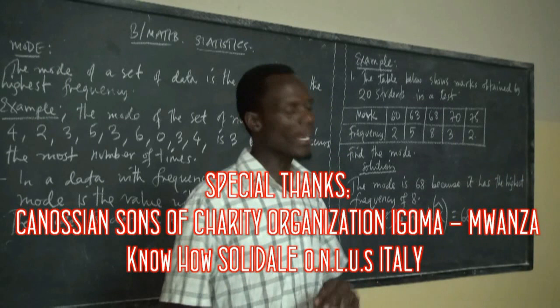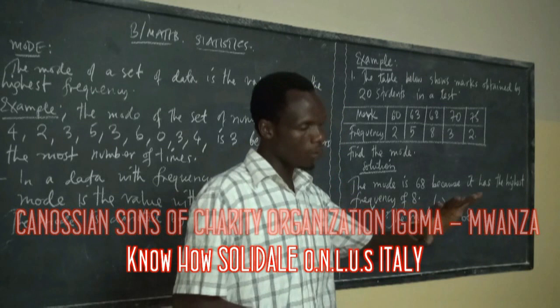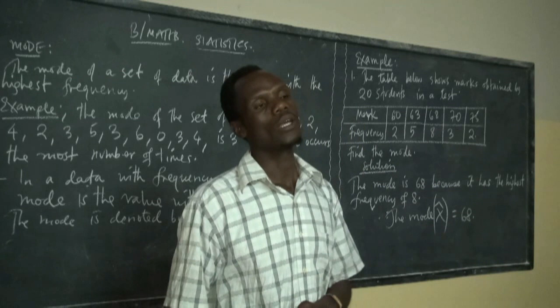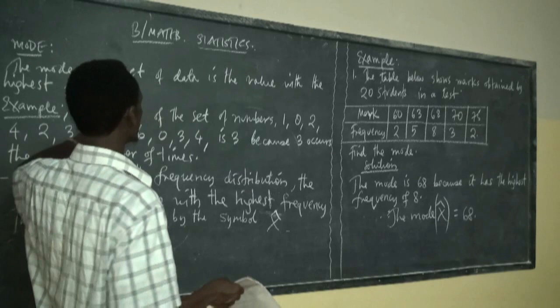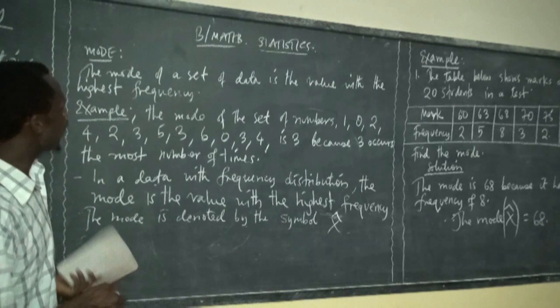Out of all data that has been given in the question, or in anything, or in the table — if you find a data with the highest frequency out of all, that is called mode. Mode is the value with the highest frequency.